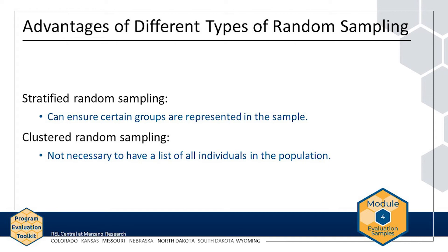Clustered random sampling may be particularly useful when a list of all participants in a population is not available. For instance, state education agency staff might want to test AMP in select schools before making it more widely available. To do this, they might randomly select middle schools by region to implement or not implement AMP. In this way, they could obtain a representative sample of students across the state without having a list of all students.